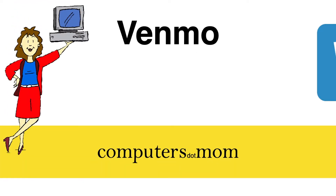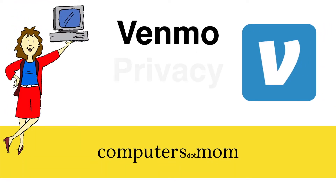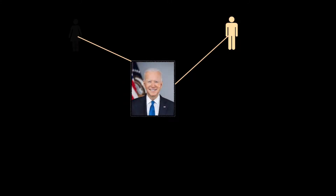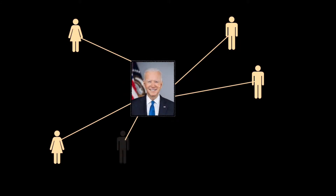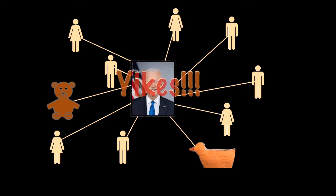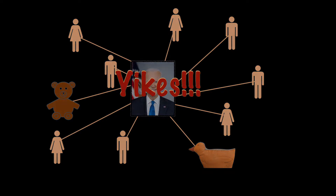Hey, it's Allison from Computers.Mom with a quick tutorial on Venmo privacy settings. Venmo has long allowed you to keep your transactions private, but in 2021, a journalist was able to identify President Biden's Venmo account and see who his friends were. In response, Venmo has added an option to hide your friends list from public view.